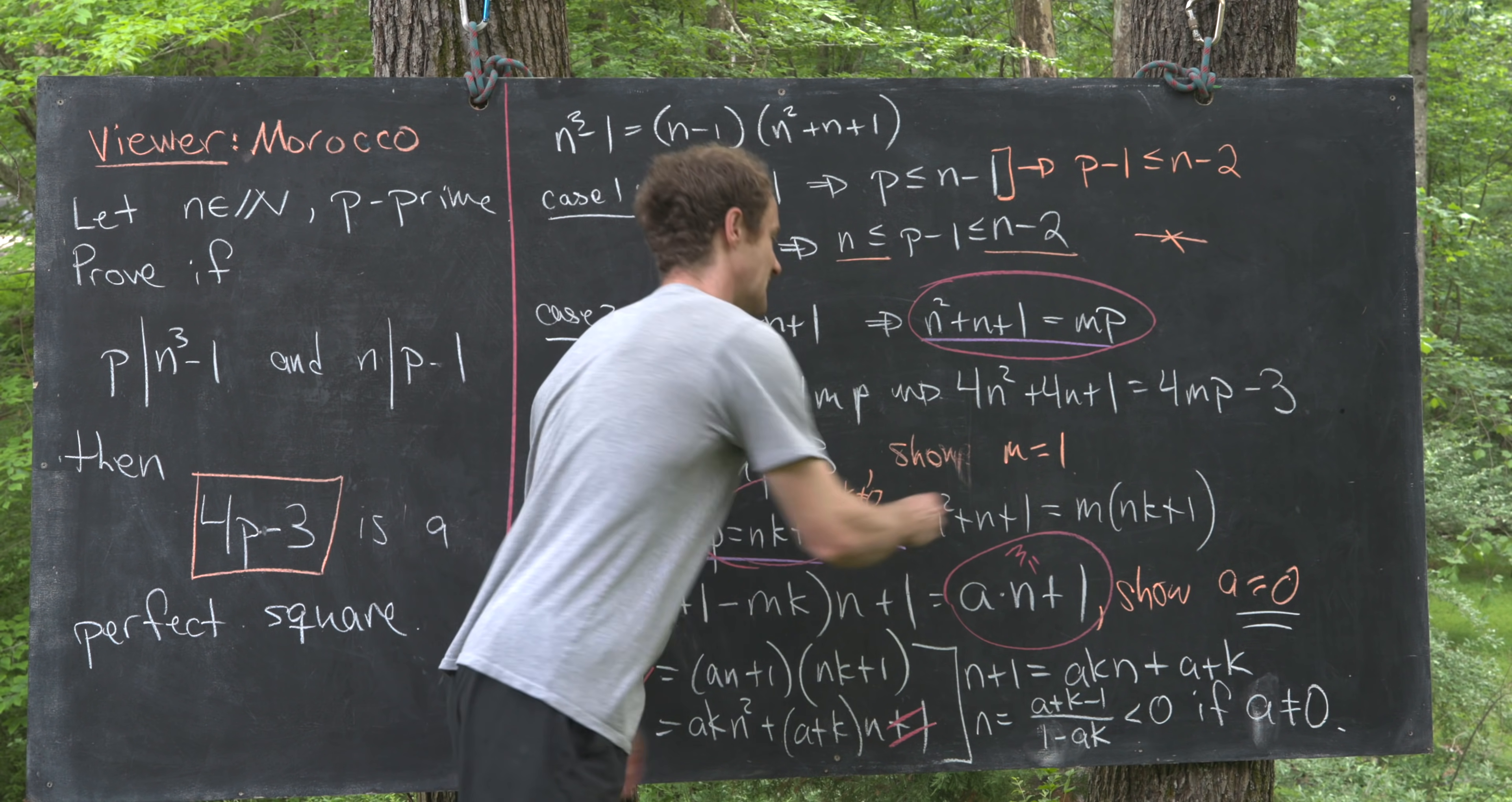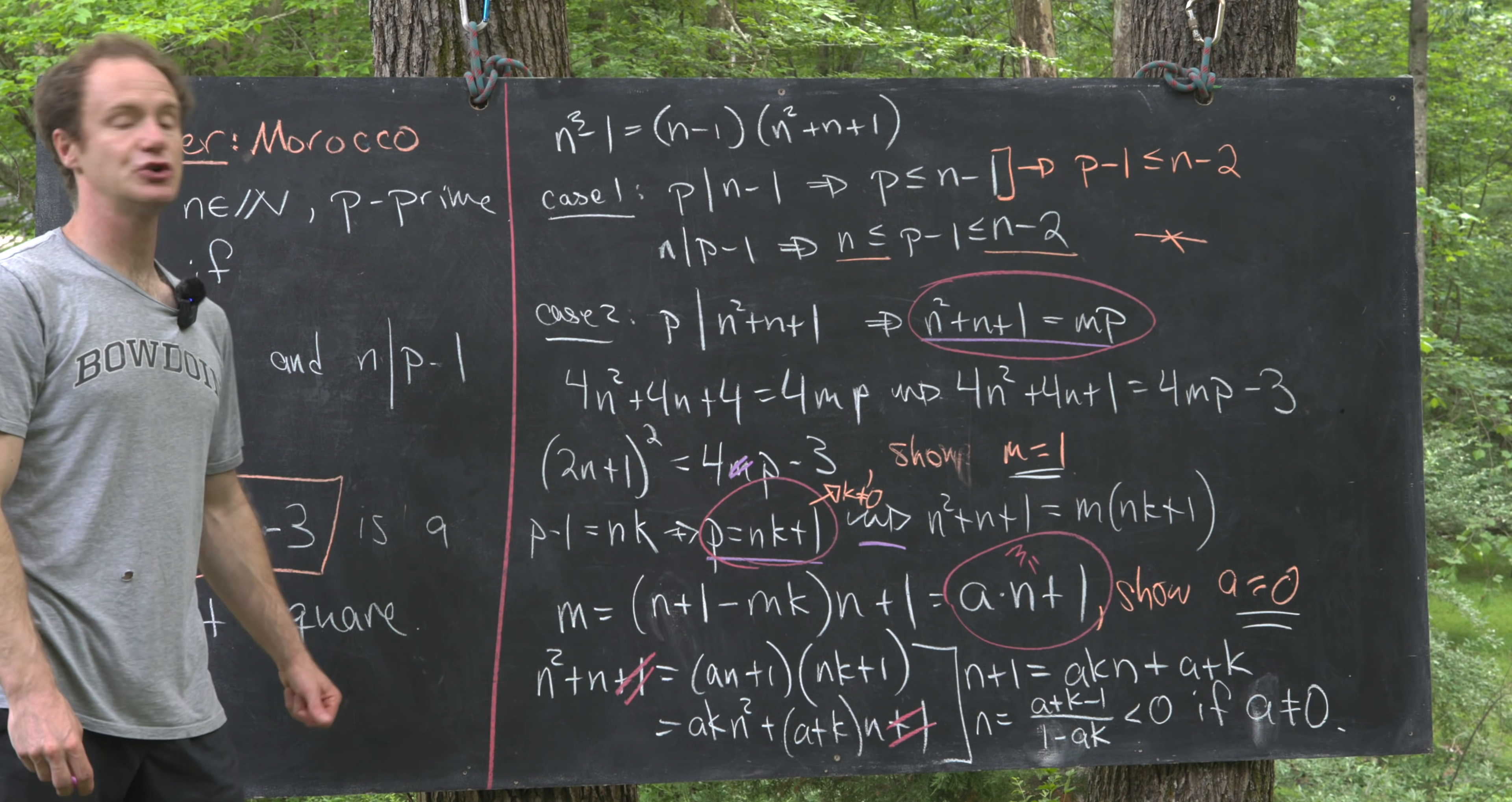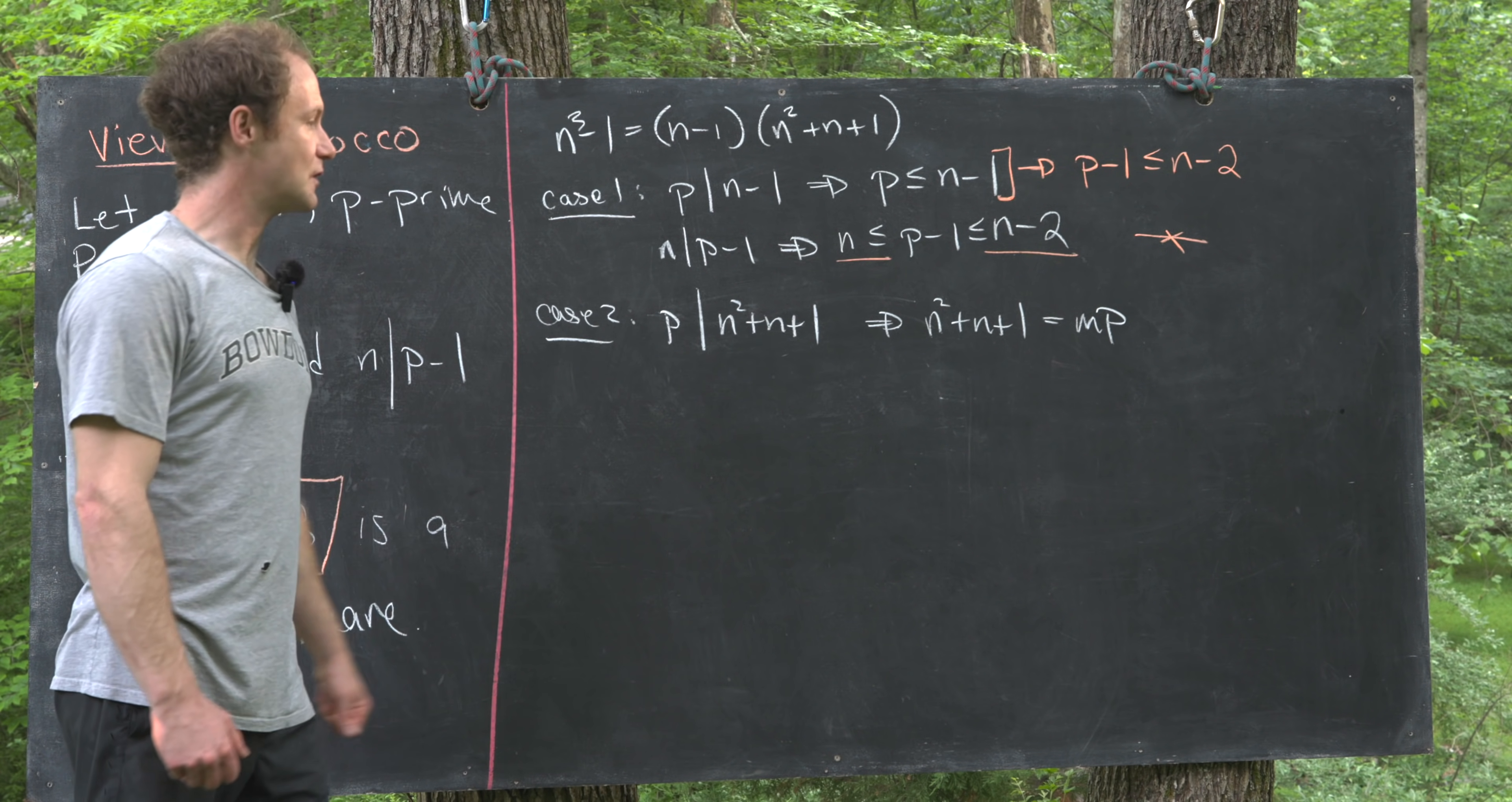So that means that a must be equal to 0, but that tells us that m must be equal to 1. But that tells us that 4p-3 is in fact (2n+1)², in other words it's a perfect square, and that finishes the problem.